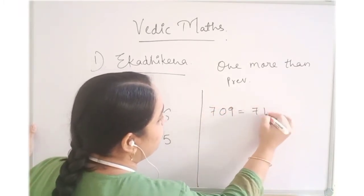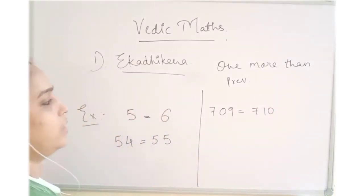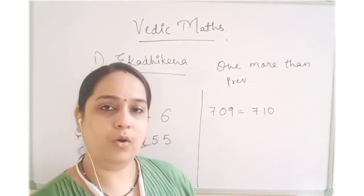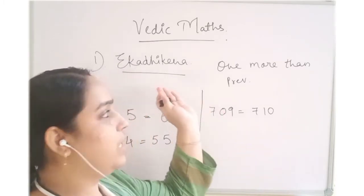Same way, 7999. Ikadi Kena of 7999 is 8000. Correct? I hope this is clear. What is Ikadi Kena?